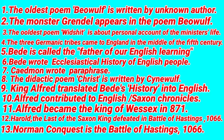Question 3: The poem Widsith is probably the oldest in English. It is about personal accounts of a minstrel's life. Question 4: How many tribes came to England in the middle of the 5th century? There were three tribes — Angles, Saxons, and Jutes. They came to help the Celts, who were the main inhabitants of England.